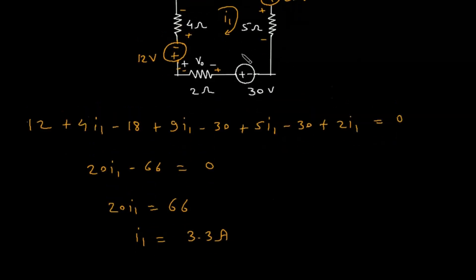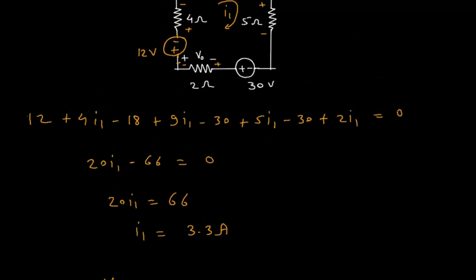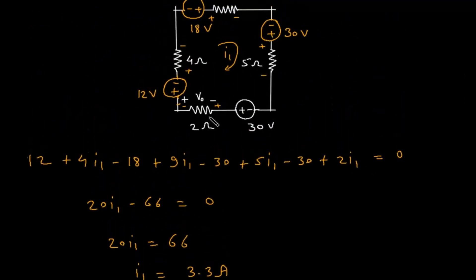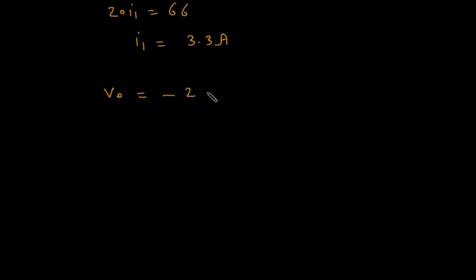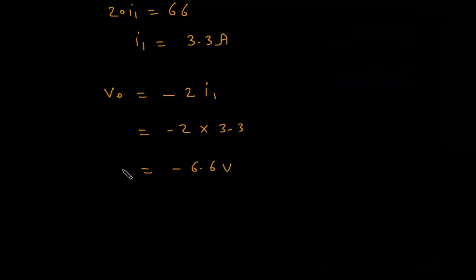The direction of current is opposite to the polarity of VO. So VO equals minus 2 times I1. So minus 2 times 3.3, this will be minus 6.6 volts. Therefore VO equals minus 6.6 volts.